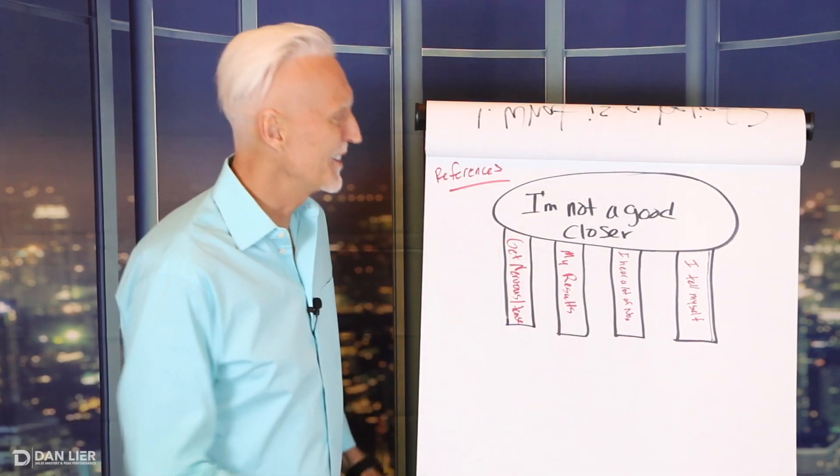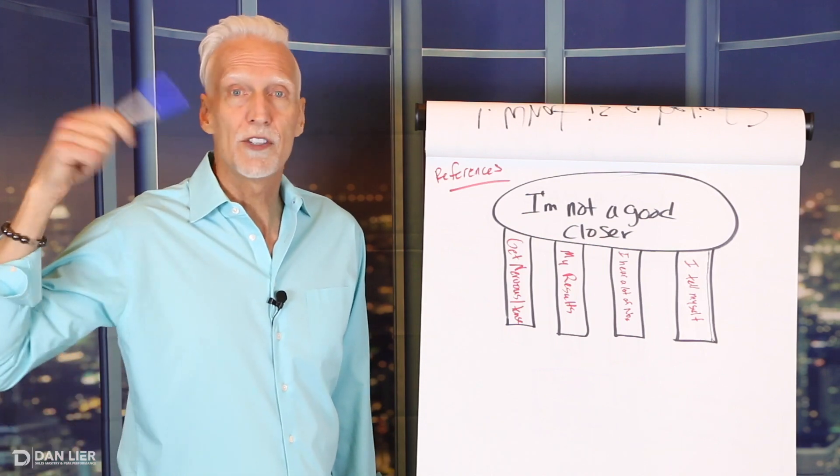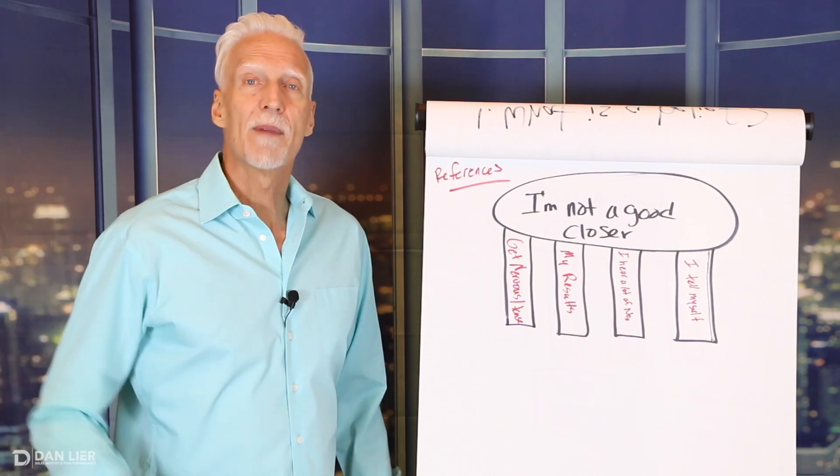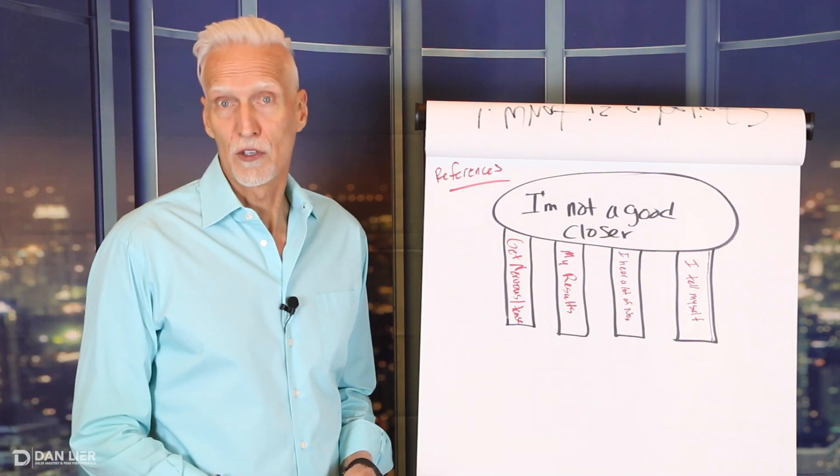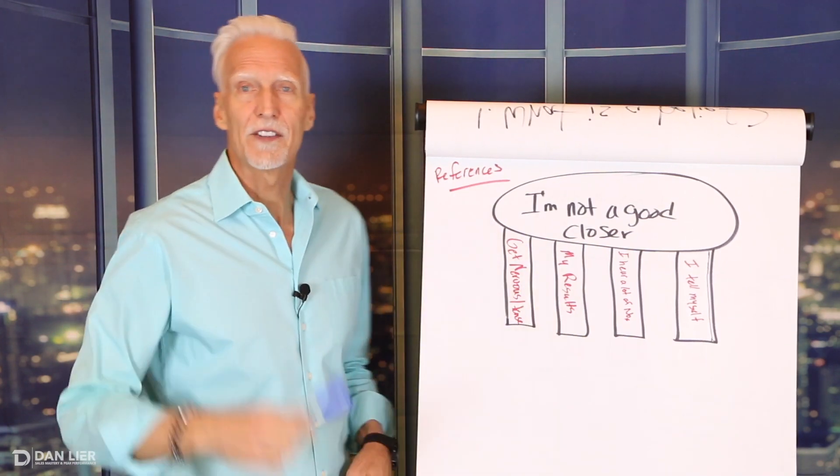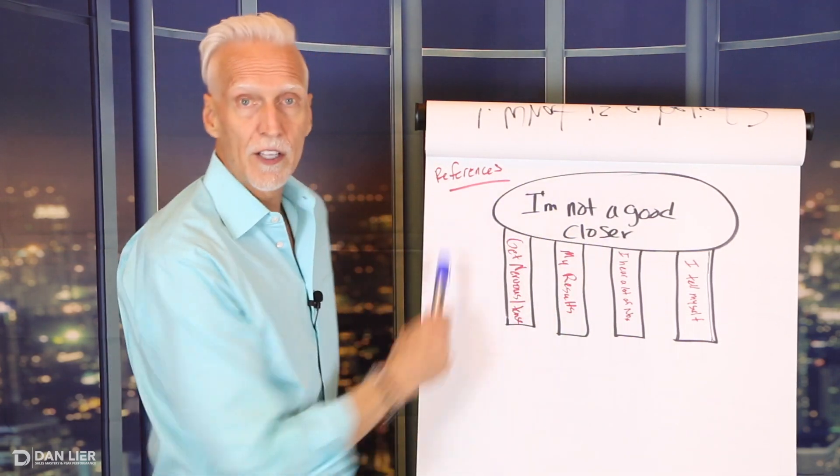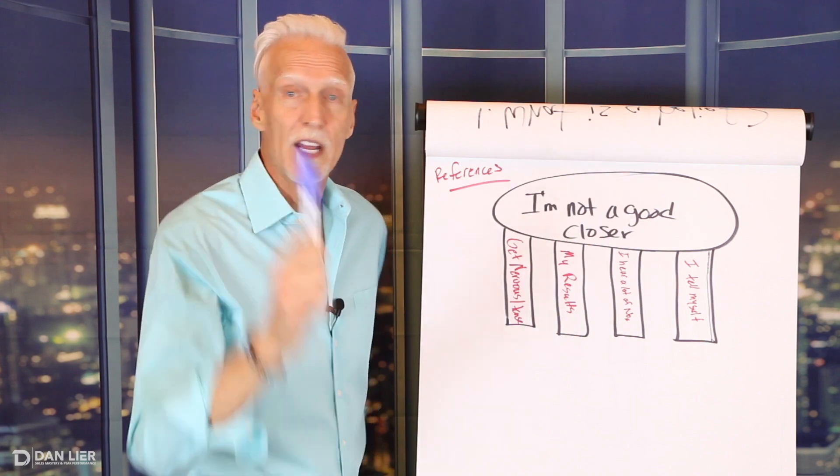And number four, I tell myself. He says, I have language. I have self talk in my head telling me that I'm not a good closer. Imagine that. So great. So let's talk about this. So if I were talking to you right now, and this were you, I would say, great. So you're not a good closer. That's what you believe, right? And you say yes.